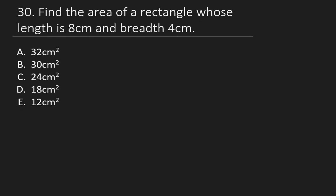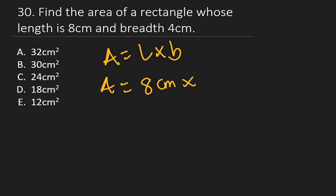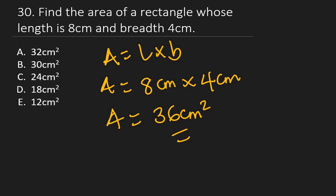Question 30: Find the area of a rectangle whose length is 8 cm and breadth is 4 cm. Area = length × breadth = 8 × 4 = 32 cm². The right answer is A: 32 cm².